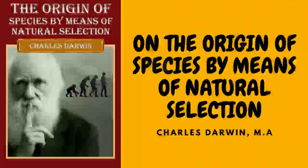This point, if it could be cleared up, would be interesting. If, for instance, it could be shown that the greyhound, bloodhound, terrier, spaniel, and bulldog, which we all know propagate their kinds so truly, were the offspring of any single species, then such facts would have great weight in making us doubt about the immutability of the many very closely allied natural species. It has often been assumed that man has chosen for domestication animals and plants having an extraordinary inherent tendency to vary and likewise to withstand diverse climates. I do not dispute that these capacities have added largely to the value of most of our domesticated productions.